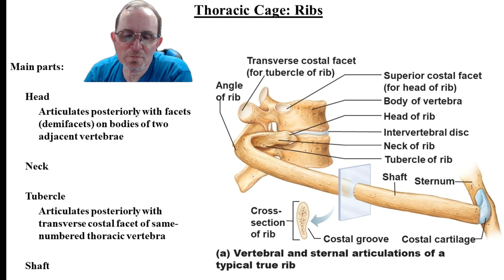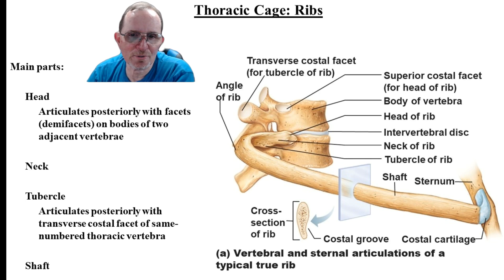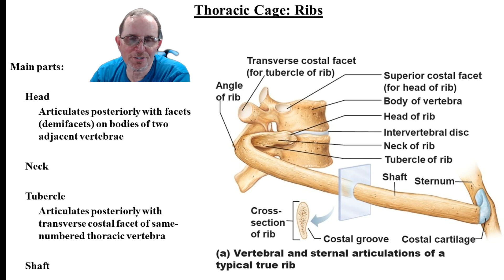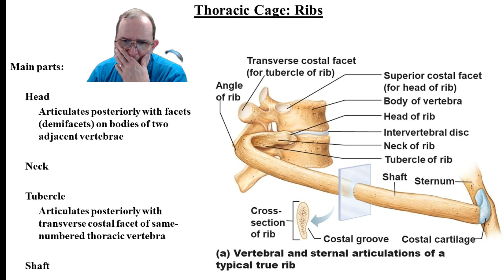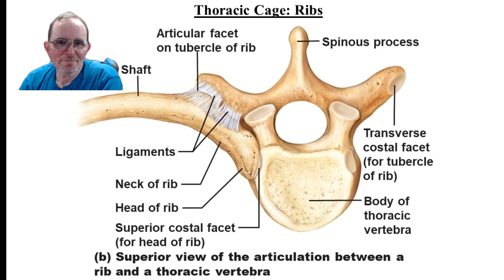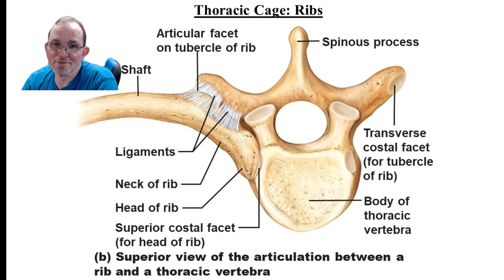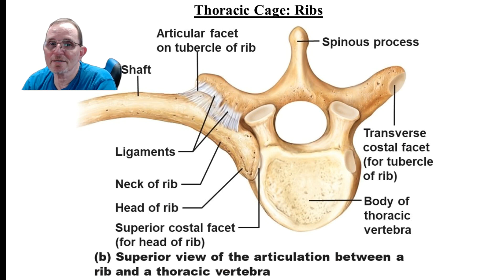The main parts of the rib are the head, which attaches to the body of the thoracic vertebra at the costal facet, and the tubercle, which attaches to the transverse process. The head is followed by the neck — just like everything else, you've always got a neck under a head. The rib then curves around and attaches via cartilage to the sternum. You can see how the rib fits into the joint, held in place by ligaments.